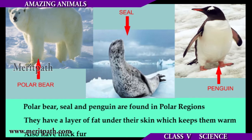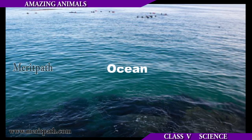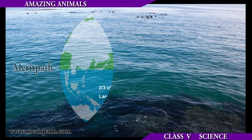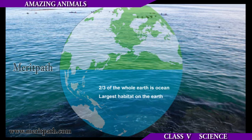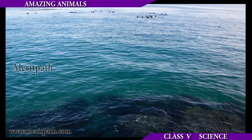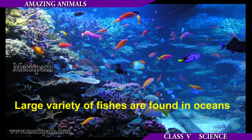Oceans are the largest habitat on earth, as two-thirds of the earth is covered with ocean. A large variety of fishes are found here.